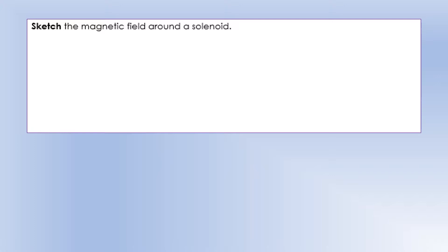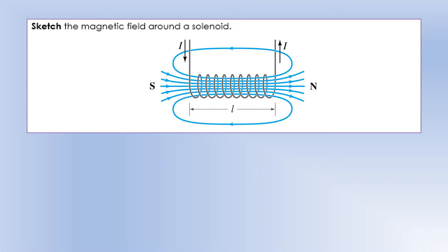What if we wrap the wire up into a coil, which has the fancy name solenoid? Well, what we get is a field that looks very much like that of a bar magnet. Inside the solenoid we get a fairly uniform magnetic field - field lines all running parallel to each other. But outside the solenoid it looks like the field of a bar magnet.